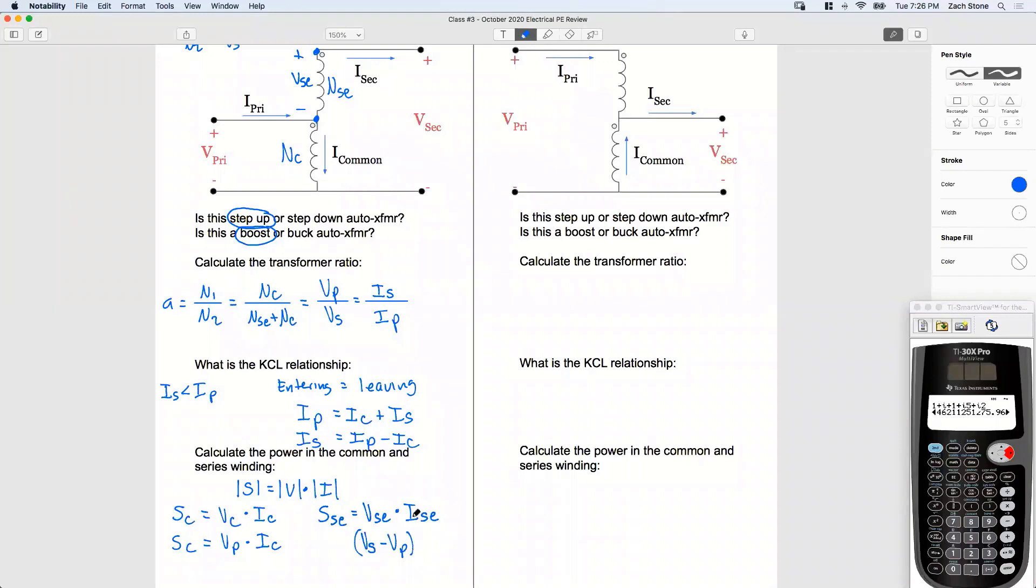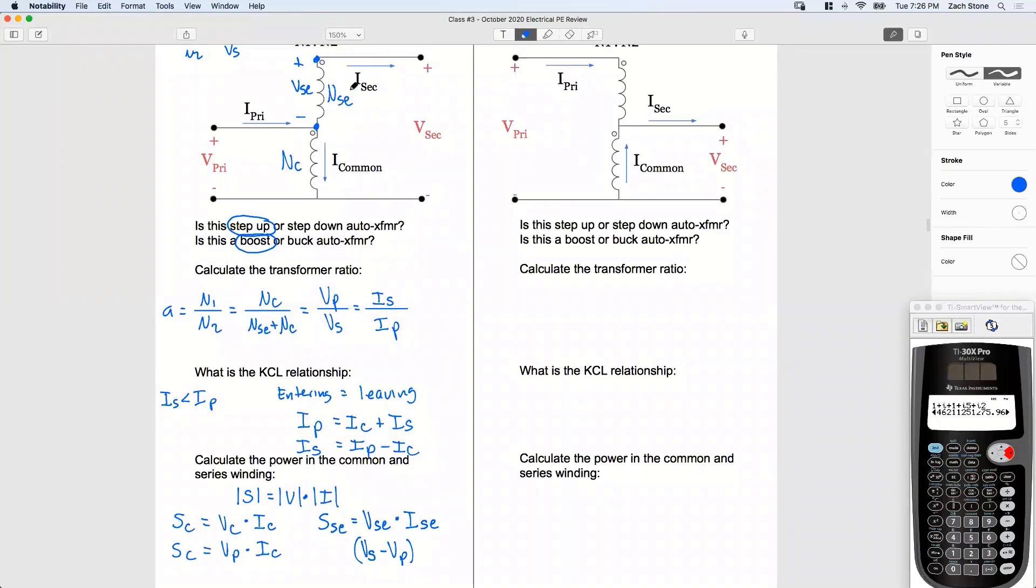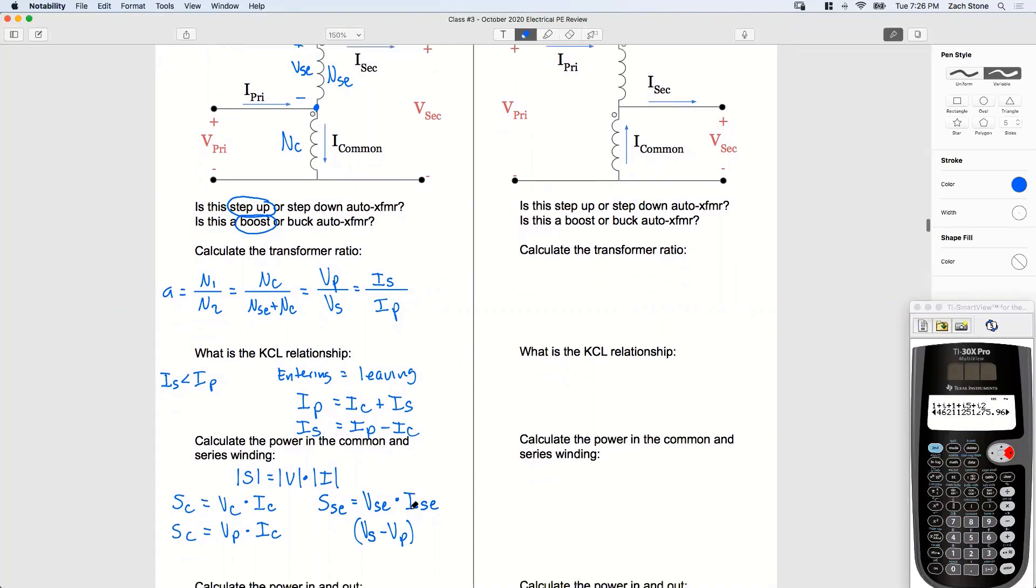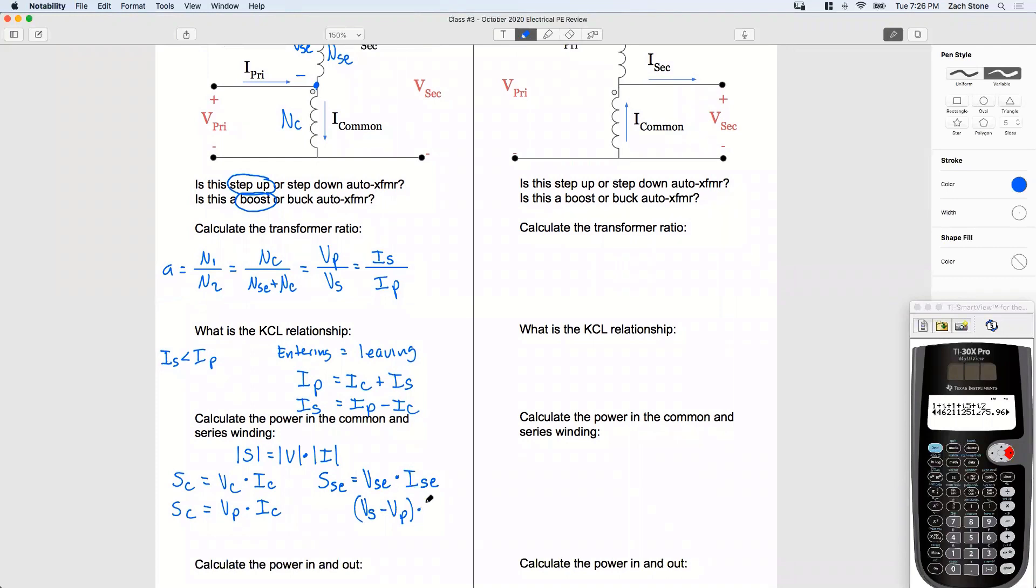Next, what's the current flowing through my series winding? From here to here is the same as from here to here. It's going to be our secondary current. Easy, right?